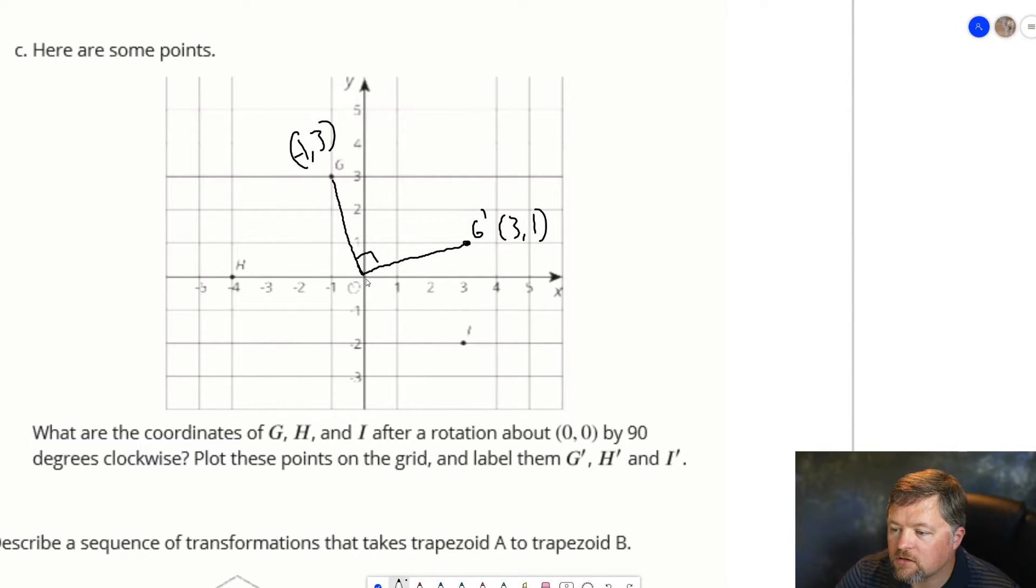H. We can do the same thing. Draw a line, 90 degrees. Same distance. This one's easy because that one is 4 units away from the origin. This one will be 4 units from the origin. H' is the point 0, 4. And H is the point negative 4, 0.